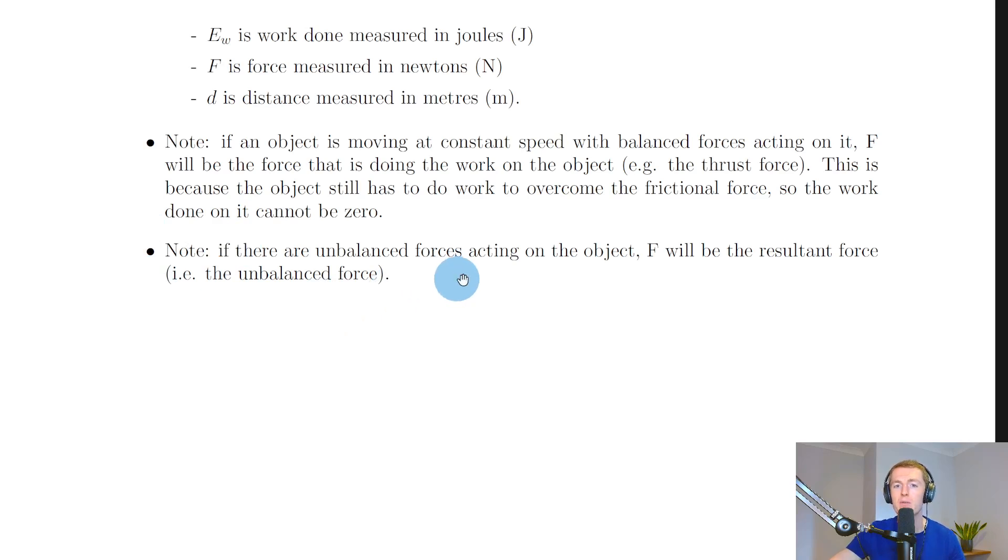The last point in the notes is that if there are unbalanced forces acting on the object, F will be the resultant force, the unbalanced force. If you have two force values but they're different in size, you need to subtract the smaller one from the bigger one to get the unbalanced force before you plug it into the equation Ew equals F times d. You'll see this done in question 3 of the worked example video for work done.